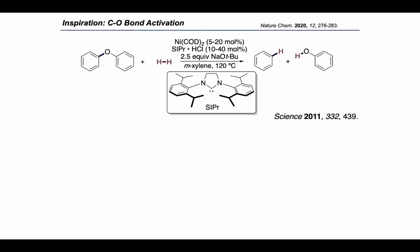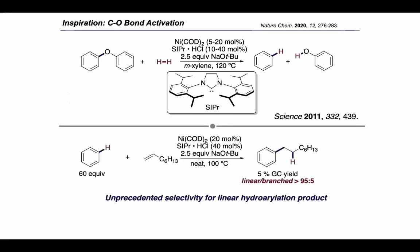For that reaction, we used a nickel catalyst ligated by an N-heterocyclic carbene, SIPR, as the ligand. We thought that maybe this same nickel NHC catalyst might be able to functionalize the strong C–H bonds in unactivated substrates in addition to the C–O bonds. Indeed, we found that a small amount of the desired product was observed when the same conditions for the C–O cleavage were applied to a mixture of benzene and terminal olefin. Most exciting was the extremely high regioselectivity for the linear to branched regioisomers in this initial result. Moving forward, we tried to further improve the reactivity and selectivity of this nickel NHC catalyst.